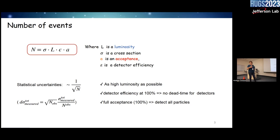I want to go with you and build a detector together. You're the scientist. What's the most important question you need to address? You want to collect as many data as possible. Those data relate to the cross section of your science, the luminosity of your accelerator, and two coefficients: acceptance and detector efficiency. To get as many data as possible, you have to build a high-luminosity accelerator with a 100% efficient, full four-pi acceptance detector.